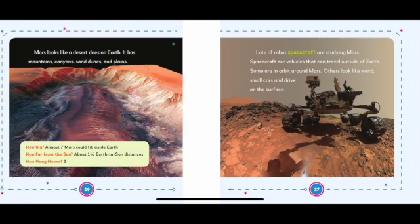Lots of robot spacecraft are studying Mars. Spacecraft are vehicles that can travel outside of Earth. Some are in orbit around Mars. Others look like weird small cars and drive on the surface.